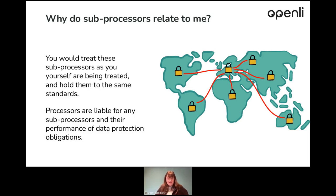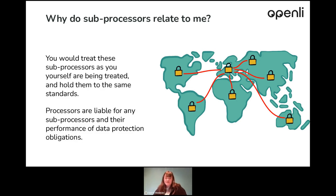The way I think of it is kind of a line. The controller passes the personal data to the processor. The processor then processes that personal data based on what the controller has instructed, making sure they follow the GDPR and have all the measures in place to protect it. If the processor chooses to engage another processor — commonly referred to as a sub-processor — you then need to use the exact same measures that were conveyed onto you. You are just furthering that personal data down the line, but you are liable for that sub-processor. So anything that goes wrong, you need to be aware that you've put the correct measures in place to ensure they protect it as much as you do.